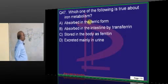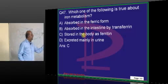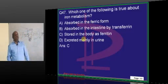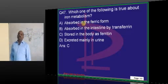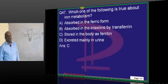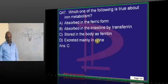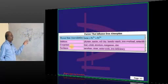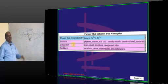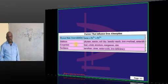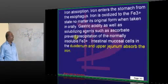Iron metabolism: iron is typically stored in the body as ferritin, and it is absorbed in the ferrous form rather than the ferric form.